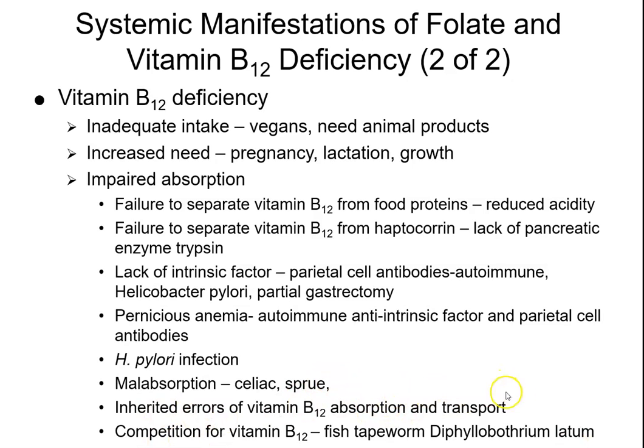If we don't have the receptors to bind intrinsic factor, or don't have enough intrinsic factor, or the parietal cells aren't working — many things can go wrong. B12 must ultimately become holotranscobalamin, which is the active form. Unless it goes through all the necessary steps to become holotranscobalamin, the body can't actually use it.